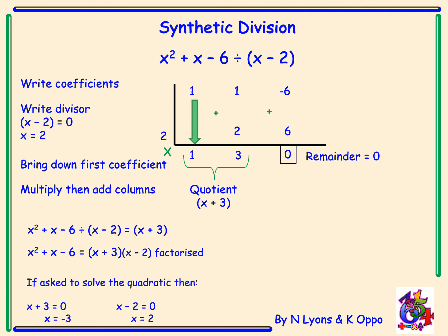If we're asked to solve the quadratic, we need to find the x values. Equate both brackets to 0 and rearrange, giving x = -3 or x = 2.